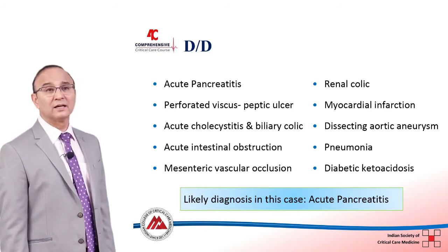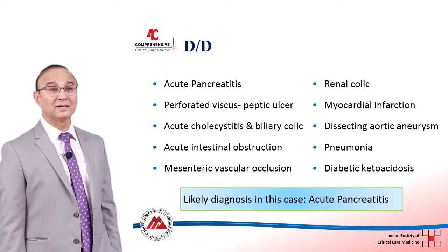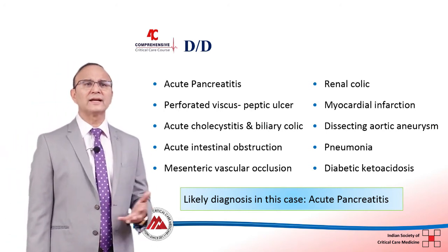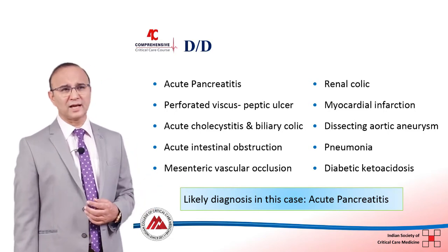dissecting aortic aneurysm, pneumonia, and diabetic ketoacidosis. But with this kind of presentation, this patient most likely has acute pancreatitis. This is one of the commonest conditions seen in the ICU — you will always find some patient with acute pancreatitis because these patients stay in the ICU for a very long time.